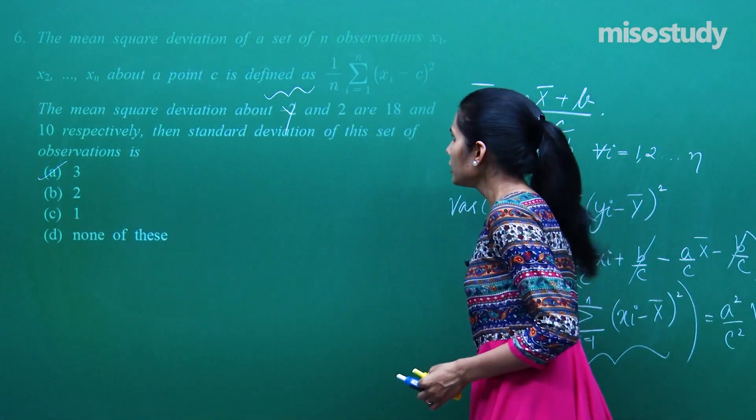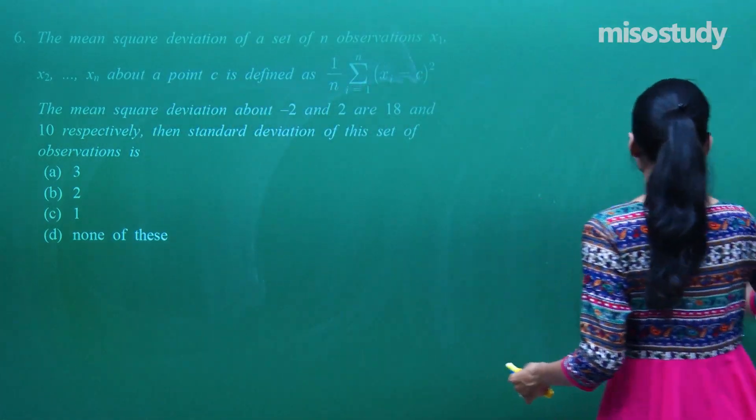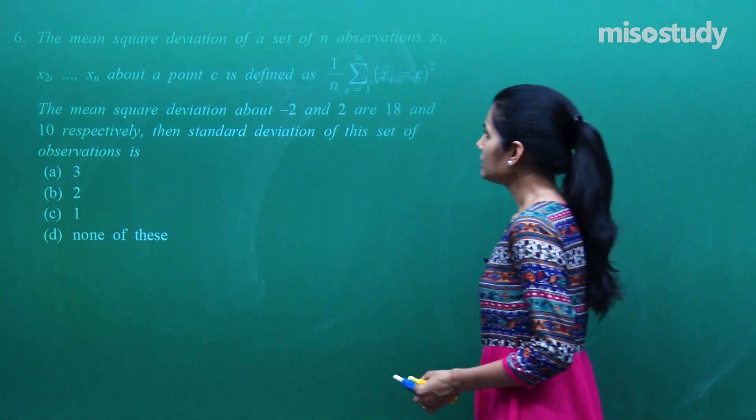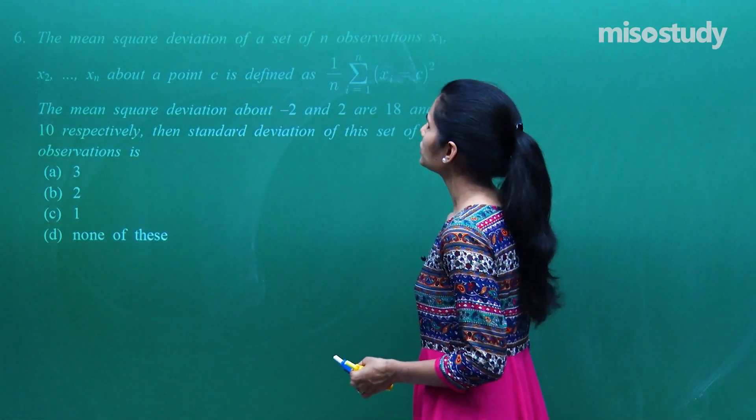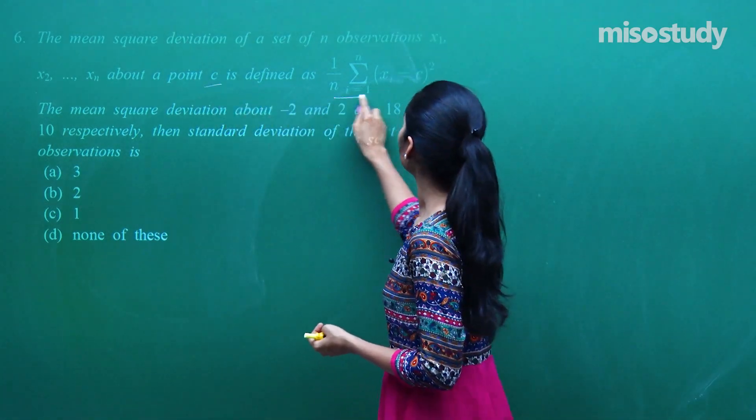Ab mean square deviation ke baare mein baat ki gayi hai, uski definition aapko already di hui hai. Let's try to see it. The mean square deviation of a set of n observations x1, x2, x3 up till xn about a point c is defined like this.